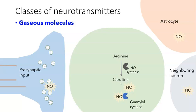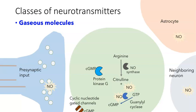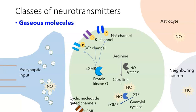One thing that NO can do is activate an enzyme called guanylyl cyclase. This enzyme takes GTP and converts it into cyclic GMP, which acts as an intracellular messenger within the cell. There are cyclic nucleotide-gated channels which open or close when cyclic GMP binds to them. In addition, there's a protein called protein kinase G which becomes activated when bound by cyclic GMP. Protein kinase G is known to phosphorylate sodium channels, calcium channels, and potassium channels — so by activating NO we can change the activity of the neuron.